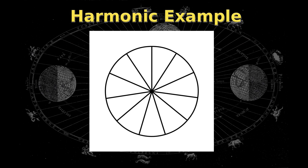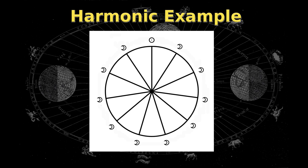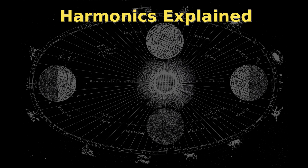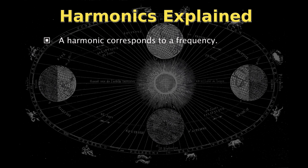Take the circle divided by 11, for example. You can have a 1/11th aspect, 2/11th aspect, 3/11th aspect, and so on, and these are all considered part of the eleventh harmonic. We refer to these divisions as harmonics because dividing up the circle by a number creates a frequency.